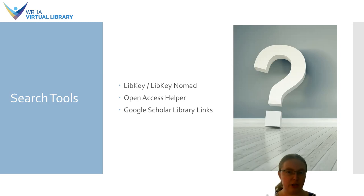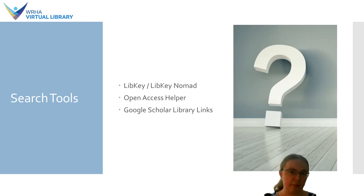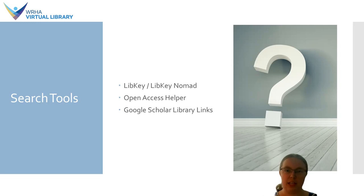The final option in this category is Google Scholar Library Links. If you like to use Google Scholar as a search tool, you can set up WHA Virtual Library as your preferred library. You can actually set more than one library, so if you also have access to U of M or another library, you can set those up as well. When searching Google Scholar, you'll see a quick link on the side of your page directing you to the library catalog for items we subscribe to, so you can click through and get to full text directly from Google Scholar.